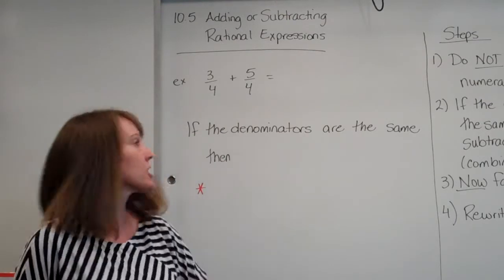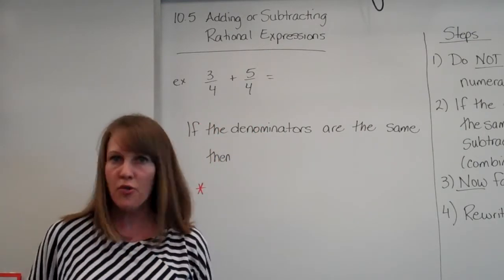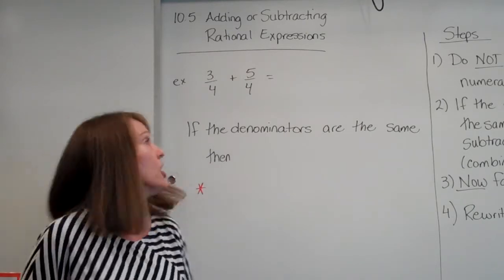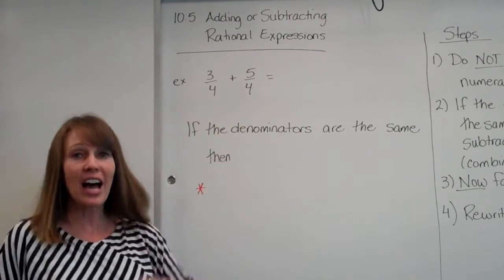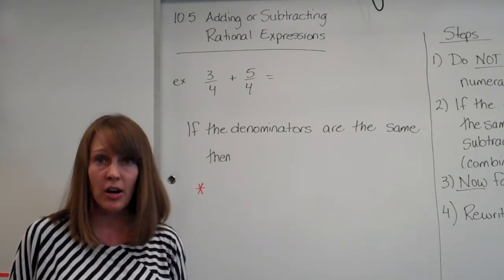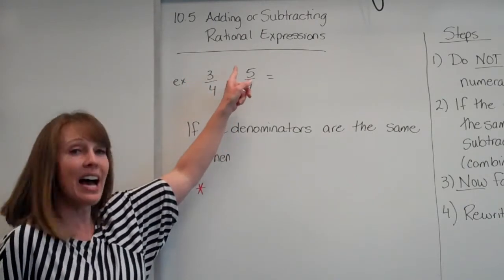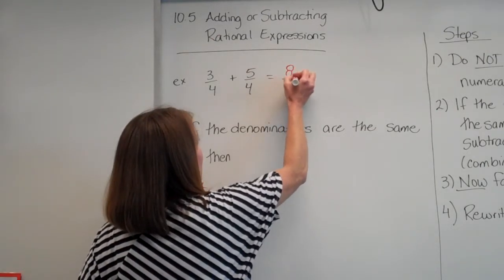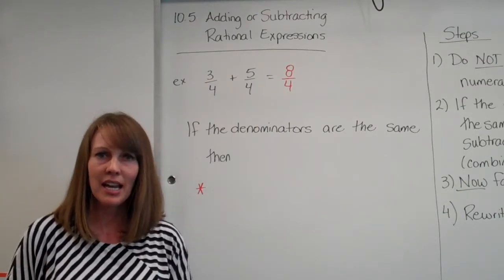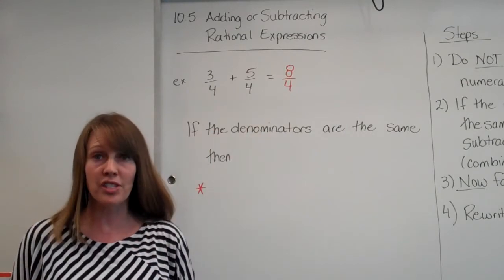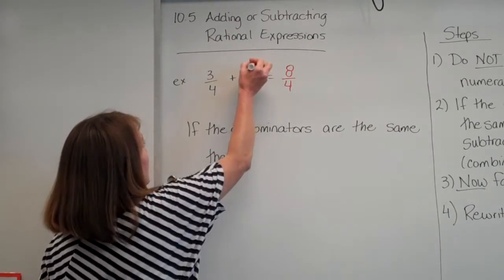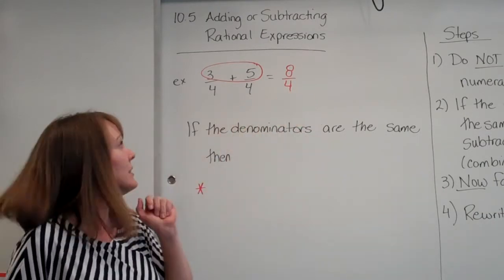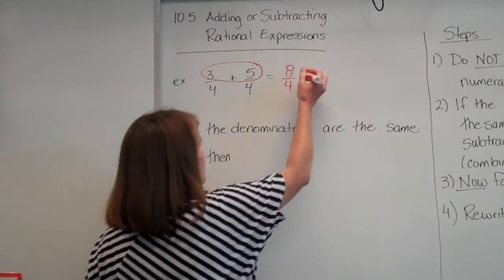We're going to start with something that we already know - just plain old fractions with good old fashioned numbers, no variables to confuse us. Because the rules that apply here are the same rules when we add in x's and all those fun expressions. So we're going to start with 3 over 4 plus 5 over 4. We're counting how many fourths there are. We have 3 fourths, we're going to add 5 more fourths, so all together there are 8 fourths. We didn't change the denominator, we just added the numerators together because the denominators were the same. Then we can still reduce that - 8 divided by 4 is 2.